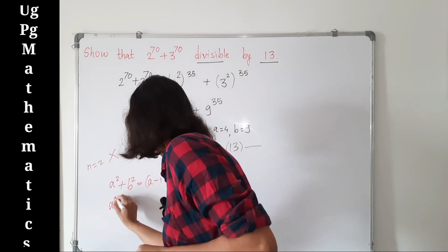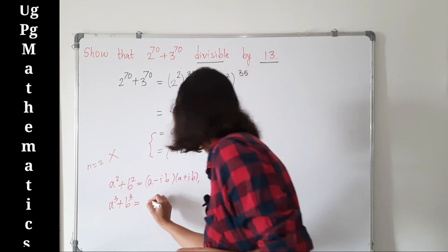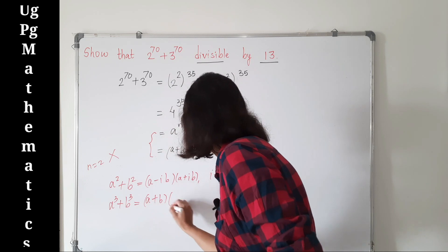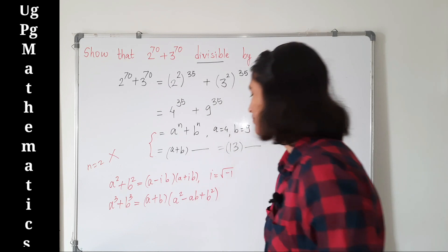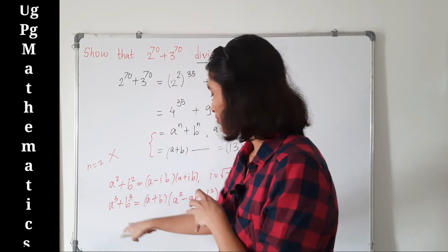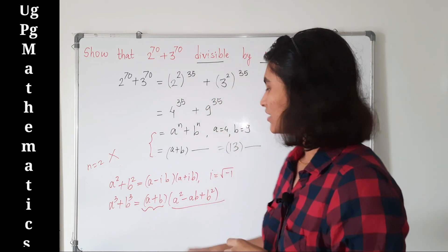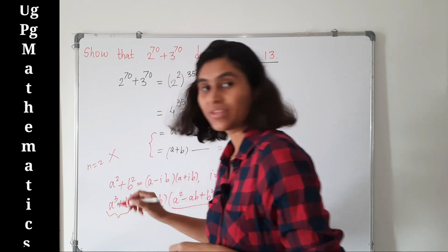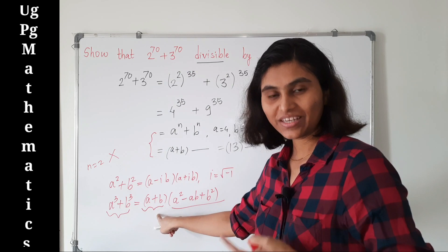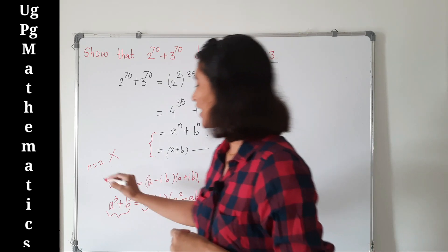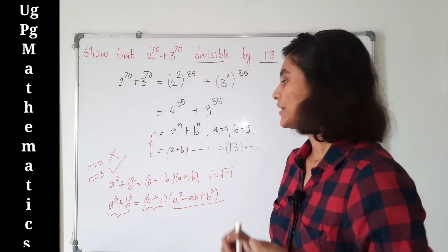Now take n equal to 3, meaning we have a cubed plus b cubed. The formula for this is (a plus b)(a squared minus ab plus b squared). So we can write a cubed plus b cubed as (a plus b) times something, which means (a plus b) is a factor. Therefore a cubed plus b cubed is divisible by (a plus b). So for n equal to 3, this formula holds.